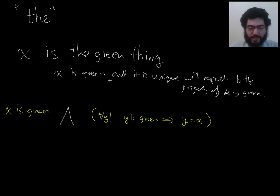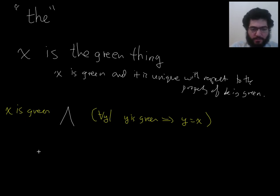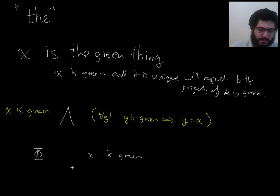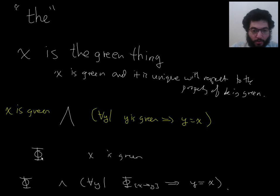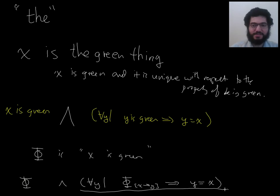Let's write this in a more general way. If phi is 'X is green,' then to say X is the green thing, you would say phi, and for all Y, if phi holds with X replaced by Y, then Y is actually just X. That's the general pattern for saying that phi holds for the X that shows up in phi, but also the X is unique with respect to phi holding for it.